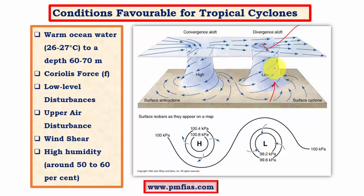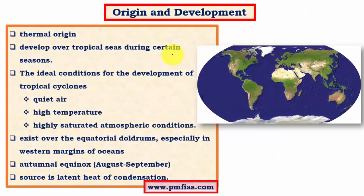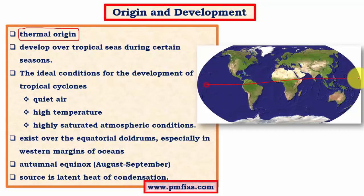Now let us look at the origin and development of tropical cyclones. They have a thermal origin — they depend on heat for their existence and develop over tropical seas during certain seasons. Tropical cyclones usually occur between August and October and are very rare in November. This season is important because ocean temperatures are maximum during these months. On land, maximum temperatures in the Northern Hemisphere occur in July, when the sun is exactly overhead of the Tropic of Cancer.